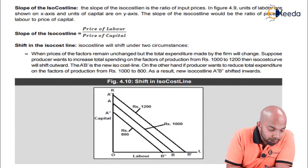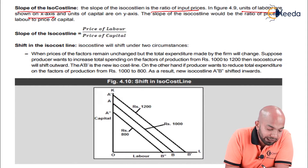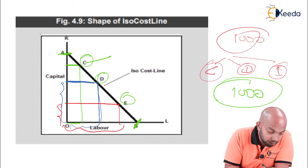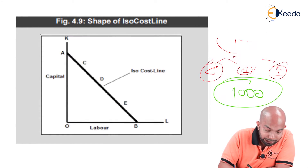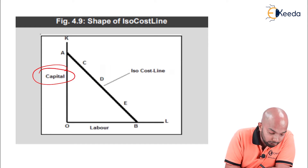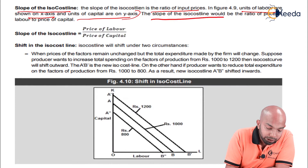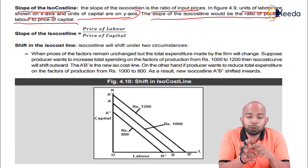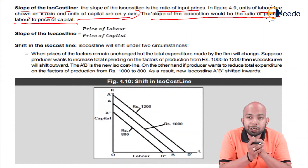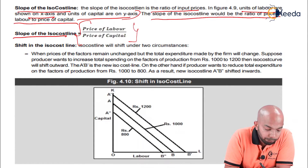The slope of the isocost line is the ratio of input prices. Units of labor are shown on the x-axis and units of capital are shown on the y-axis. The slope of the isocost line is the ratio of the price of labor to the price of capital. In symbolic format, slope = w/r, that is, price of labor upon price of capital. This is the formula for the slope of the isocost line.